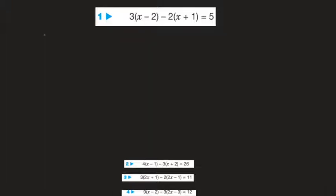Equations with brackets — let's go. We can't divide through by 3 or 2; we could, but then we'd end up with fractions. So the easiest thing to do is multiply everything inside the brackets by the number outside. We're going to do that first, remembering that the second bracket has minus 2 outside.